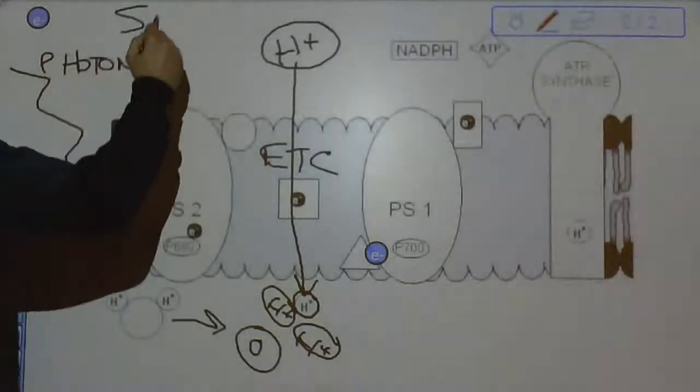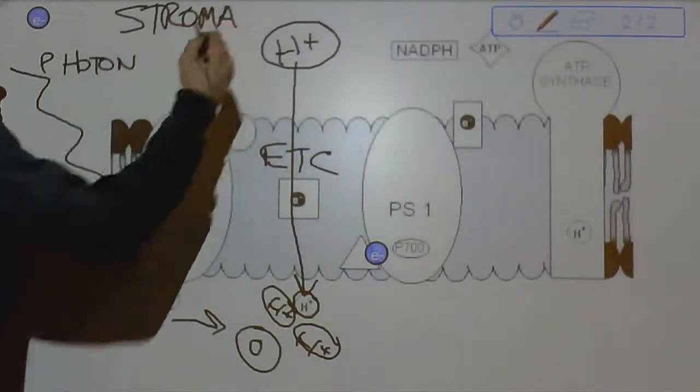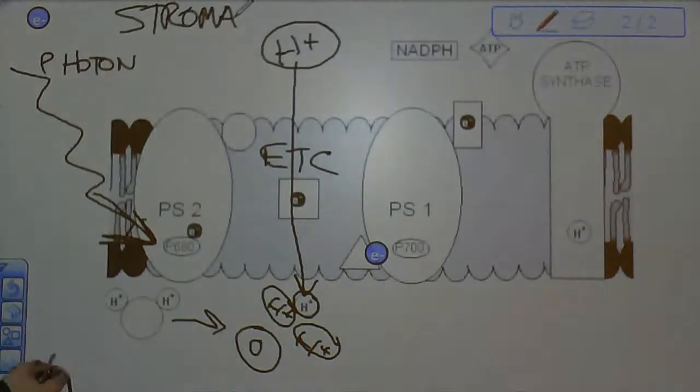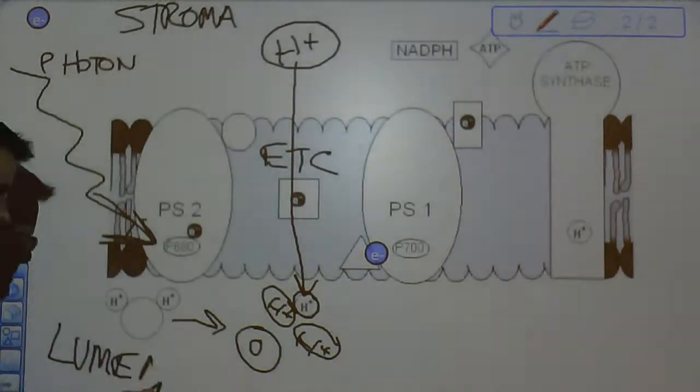But the energy is not totally lost. It's actually used to pump protons from the stroma, which is just outside the thylakoid, to the inside of the thylakoid, called the lumen. So let's label those. Stroma, that's the outside of the thylakoid. So down here is the lumen. And that is the inside of the thylakoid.